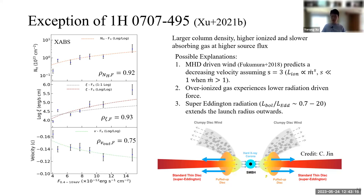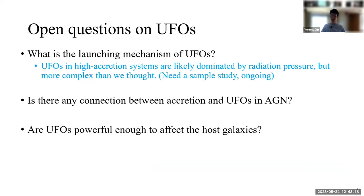Based on these results, my answer to the first open question is: UFOs in highly accreting systems are likely dominated by radiation pressure, but the physics is more complex than we thought. We need a sample study to give a better answer, which is also my ongoing project. If you are interested, you can ask me after the seminar.